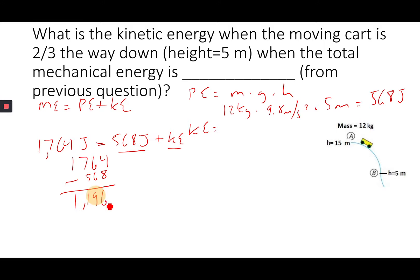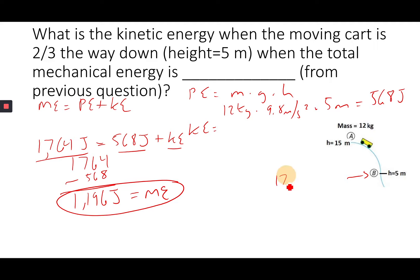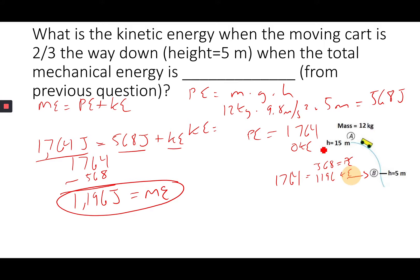So at every point the total mechanical energy remains 1,764 joules. At the top: 1,764 PE and 0 KE. Two-thirds down: 568 PE and 1,196 KE. The energy has turned into mostly kinetic energy as the cart moves down the hill — the total is always conserved at 1,764 joules.